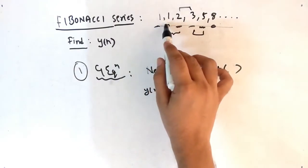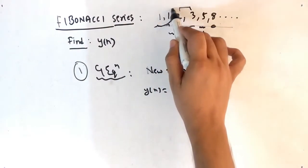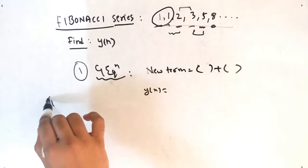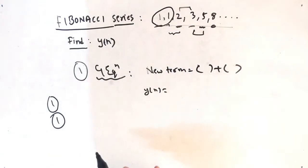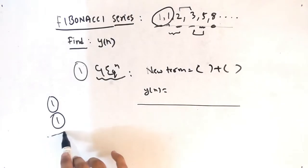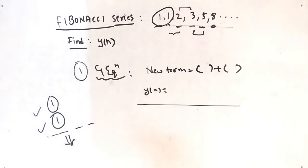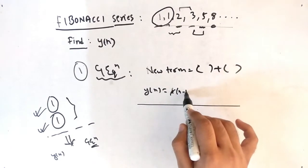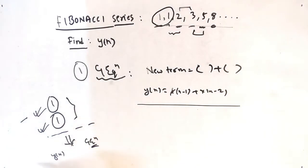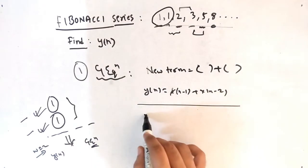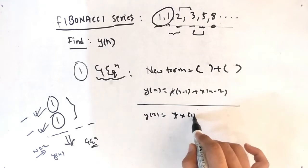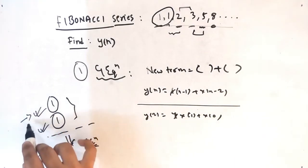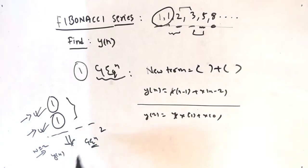The question is how to get the first two terms. The assumption is that the first two terms — 1 and 1 — are always given. After that, the generalized equation starts. Let's say the output y[n] equals x[n-1] plus x[n-2]. If n starts at 0, then at n=2: y[2] = x[1] + x[0] = 1 + 1 = 2. That checks out.